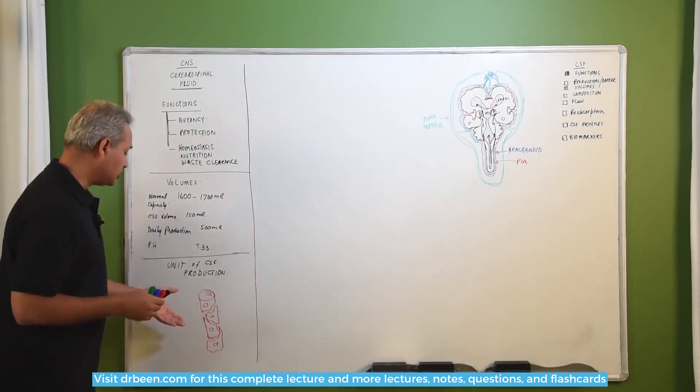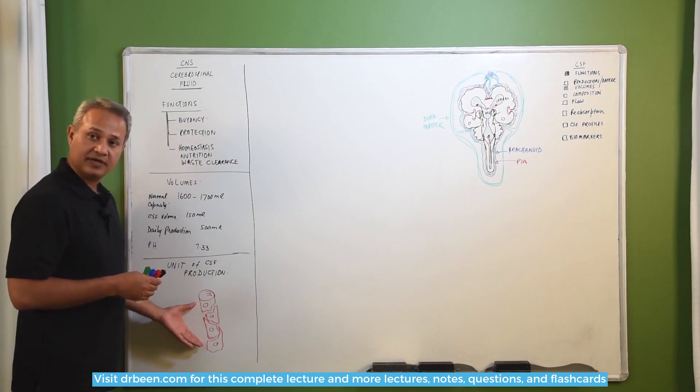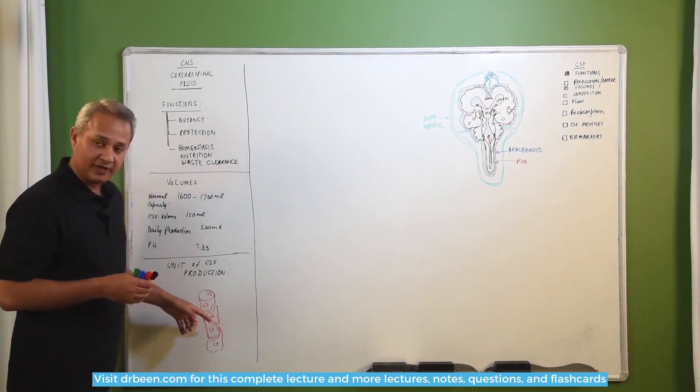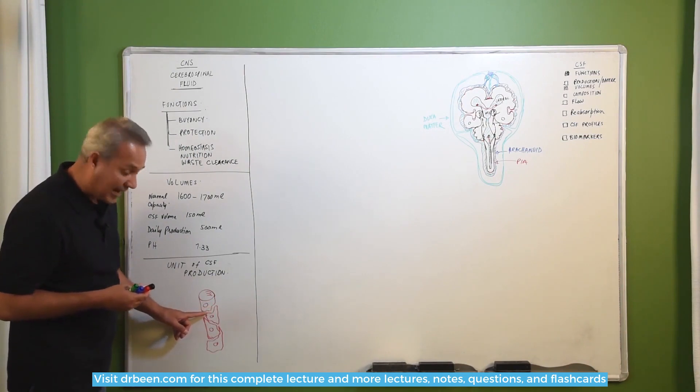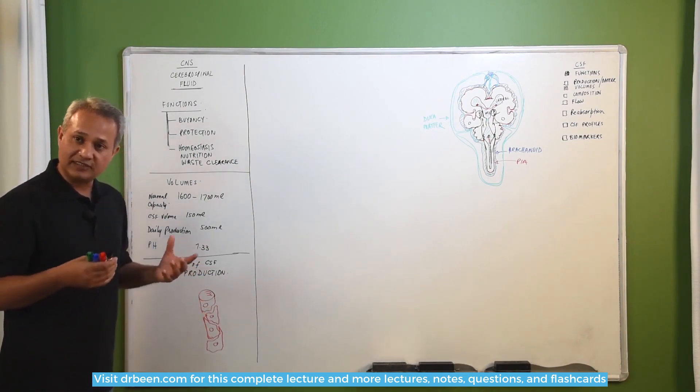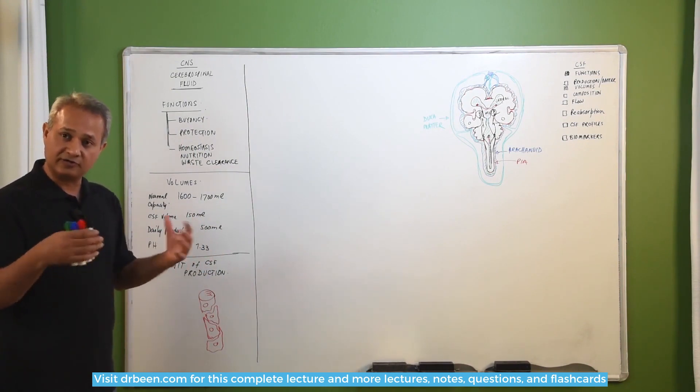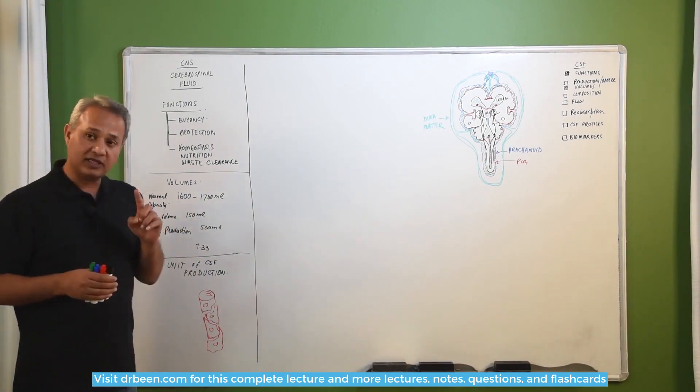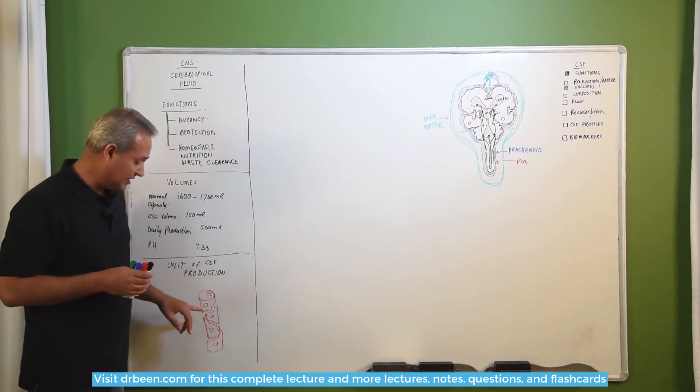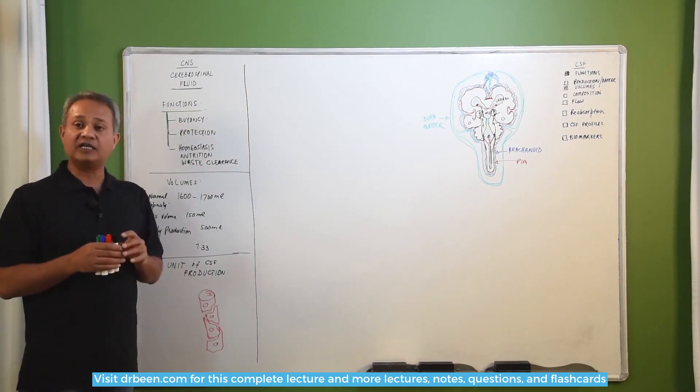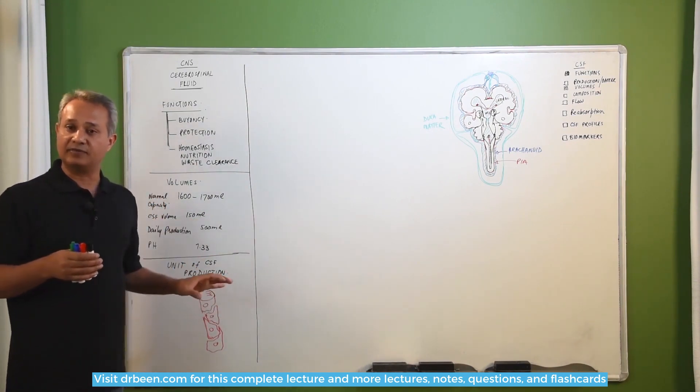We were talking about the functional unit of the CSF production. Here is the capillary. This capillary is made up of, like other capillaries, the squamous cells. These squamous cells have gaps between them. Those are the gaps through which the nutrients normally diffuse out or come in. However, one thing that is important here is that these gaps are unusually wider in these capillaries.